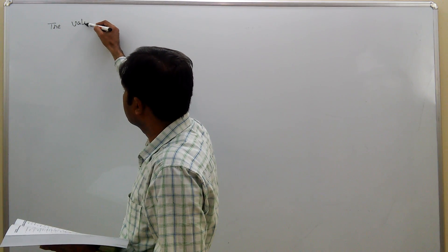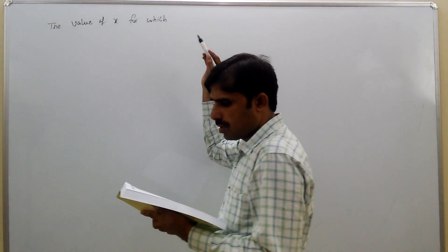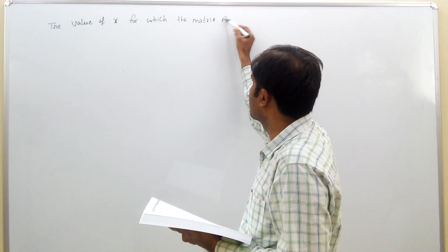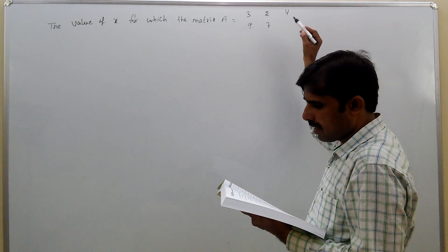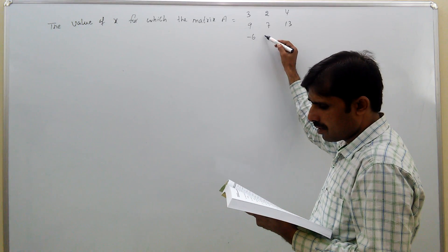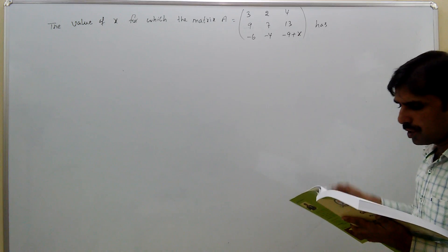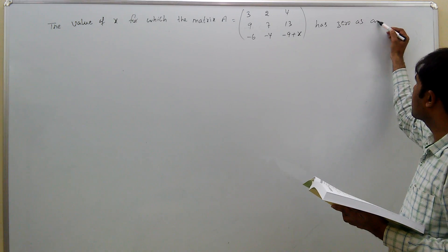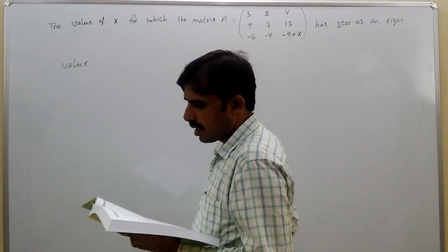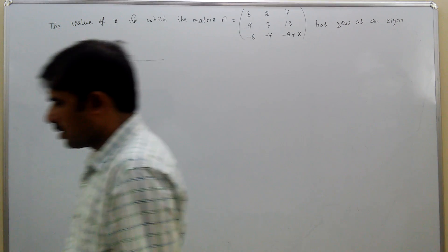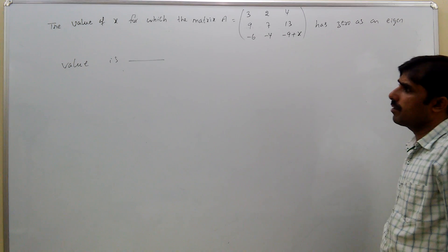Find the value of X for which the matrix A, equal to [3, 2, 4; 9, 7, 13; minus 6, minus 4, minus 9 plus X], has 0 as an eigenvalue. The meaning of the question is: we need to find the value of X such that one of the eigenvalues must be 0.